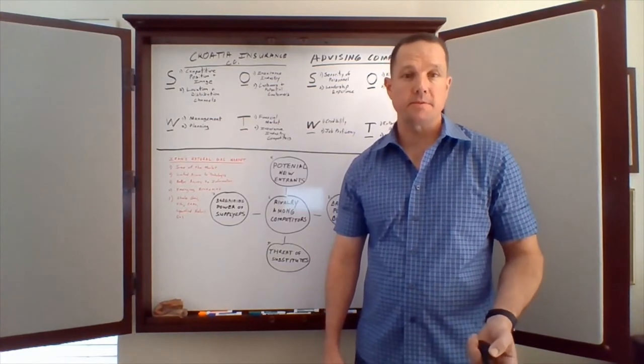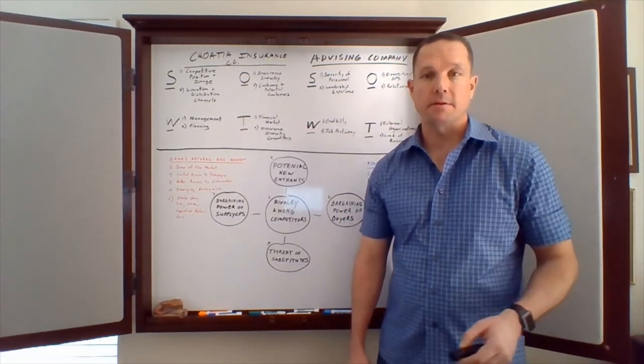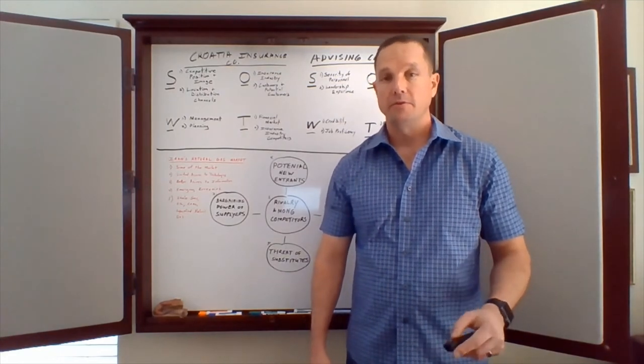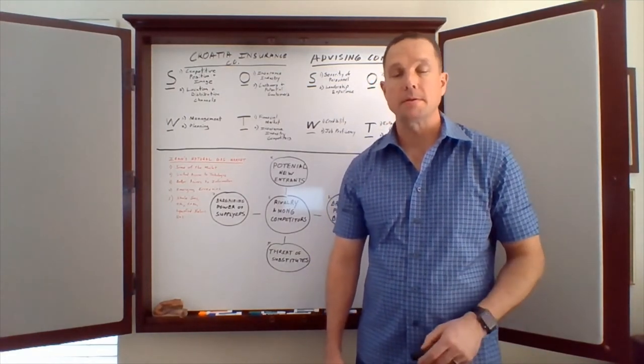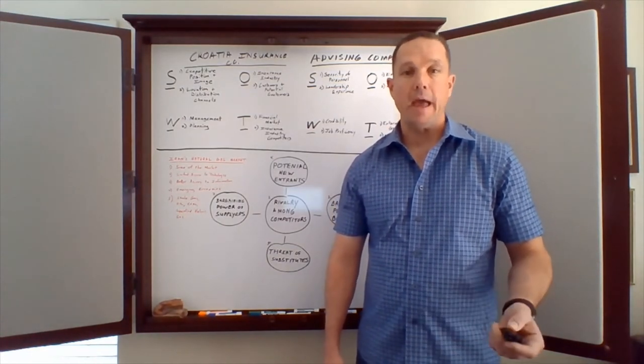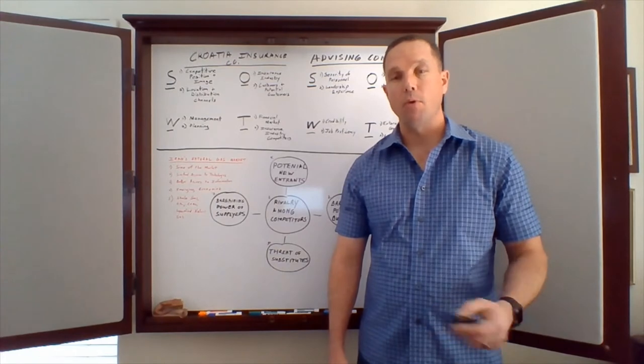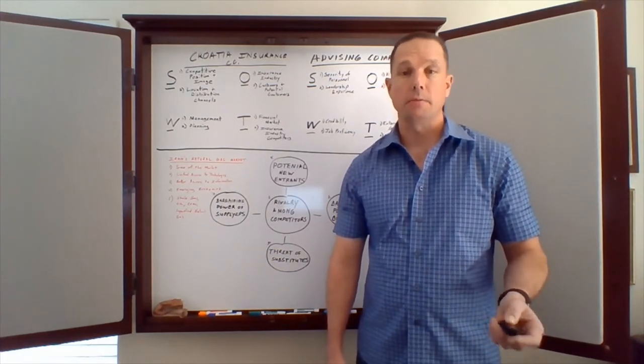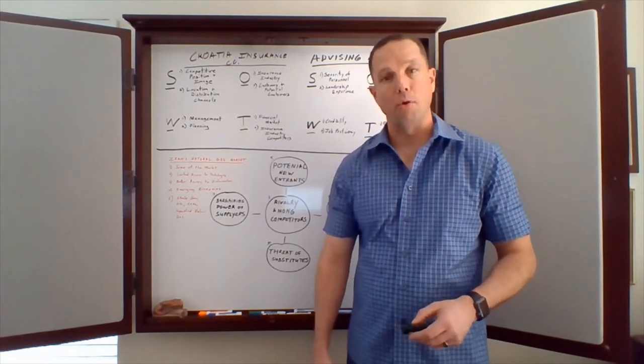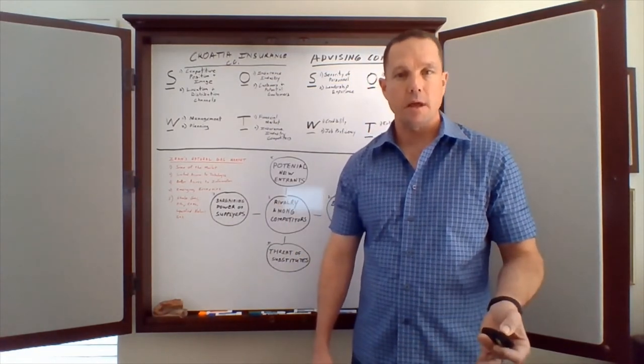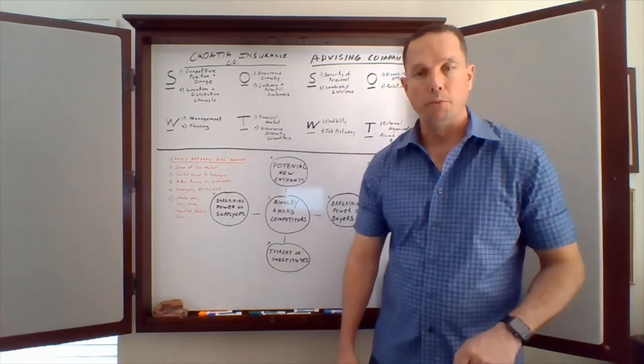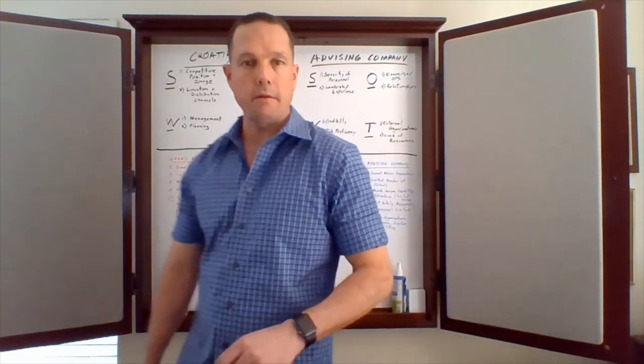What are their threats of their substitutes? Well, the threat of the substitute is going to be associated with that number of existing alternatives. Those existing alternatives that provide better performance, the lower price, switching costs, and then the actual direct substitutes for natural gas are going to be your shell gas, your oil, your liquefied gas, and your coal. So that's Iran's natural gas market model. We'll move into my organization now, that advising company.